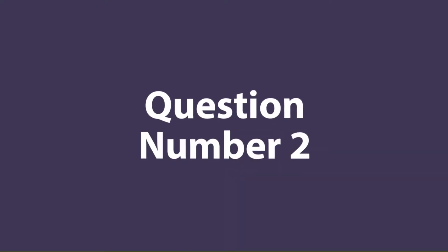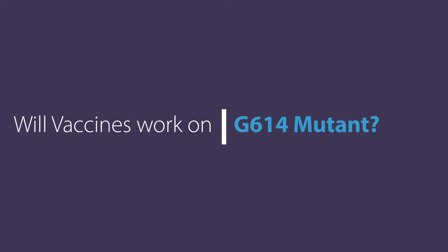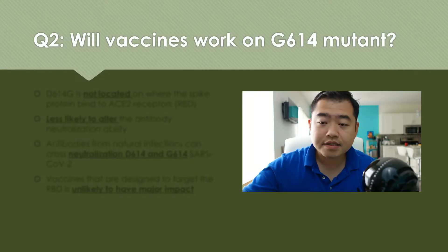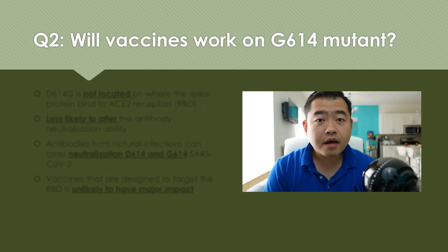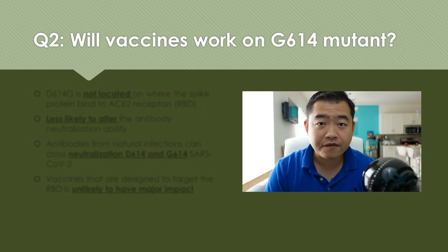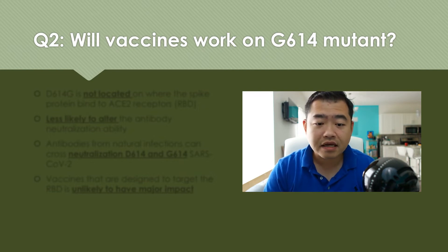Let's look at question number two: Will vaccines work on the G614 mutant? I think this is the most burning and most important question currently. We have been developing vaccines for a couple of months now, and many of those are migrating into phase three trials — the last trial before approval. So with this mutation, would it affect the vaccines currently in development?